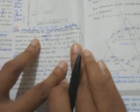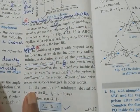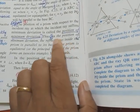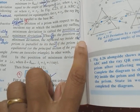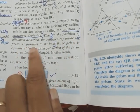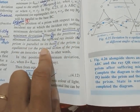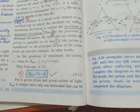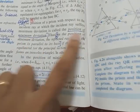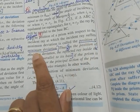The two conclusions in minimum deviation position are: first, angle of incidence equals angle of emergence; second, in the position of minimum deviation the refracted ray inside the prism is parallel to its base. This comes as a two-mark question: 'What are the two conclusions in minimum deviation position?' Also study the definition of position of minimum deviation.